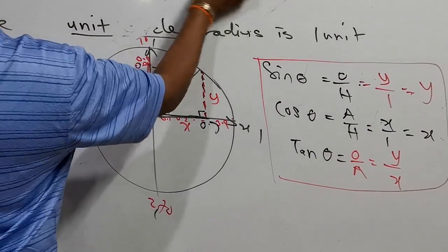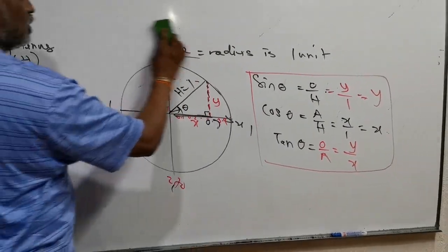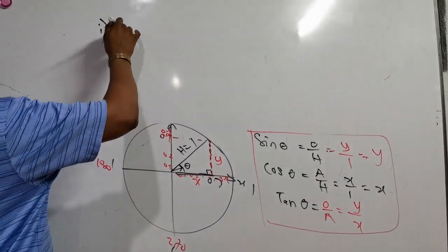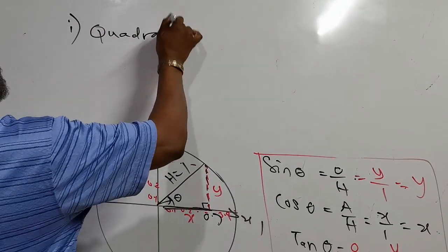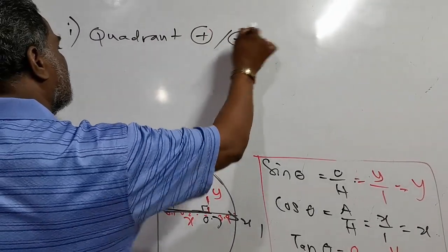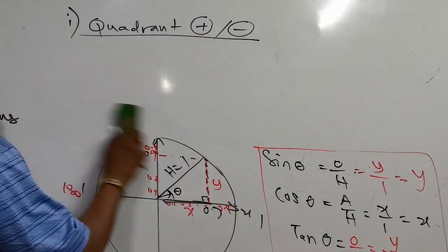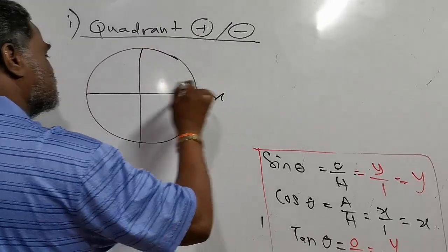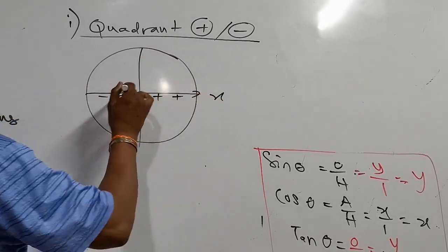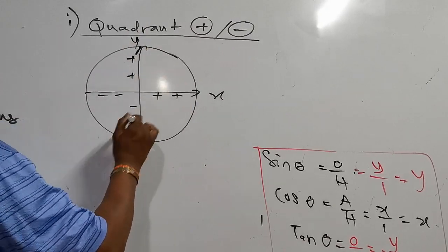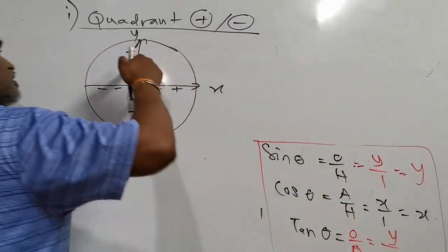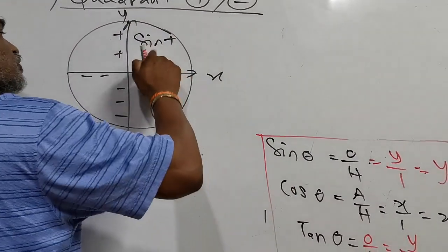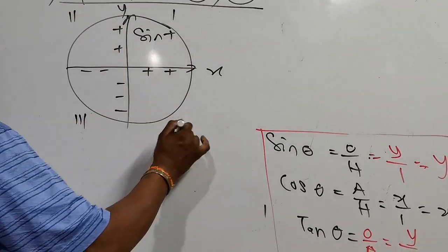Now, which quadrant is positive or negative? In the unit circle there are four quadrants. You know that coordinate x is positive on the right side and negative on the left. Coordinate y is positive on the top and negative on the bottom. The first quadrant is called the first quadrant, second quadrant, third quadrant, and fourth quadrant.